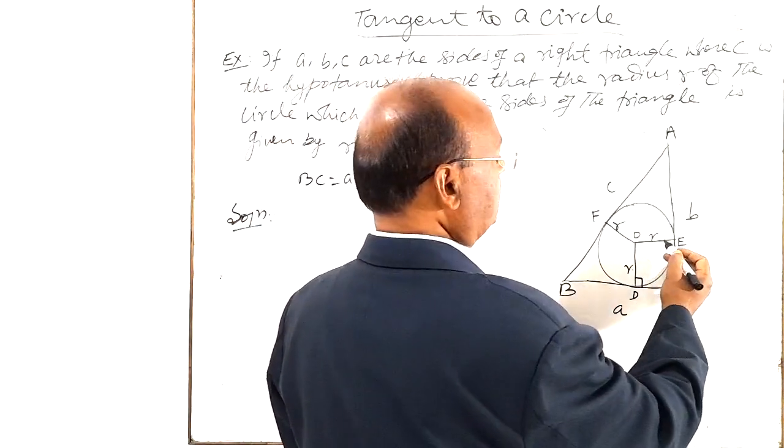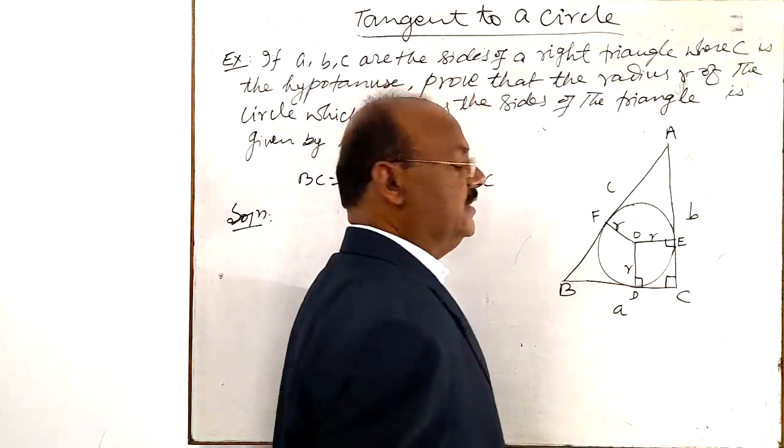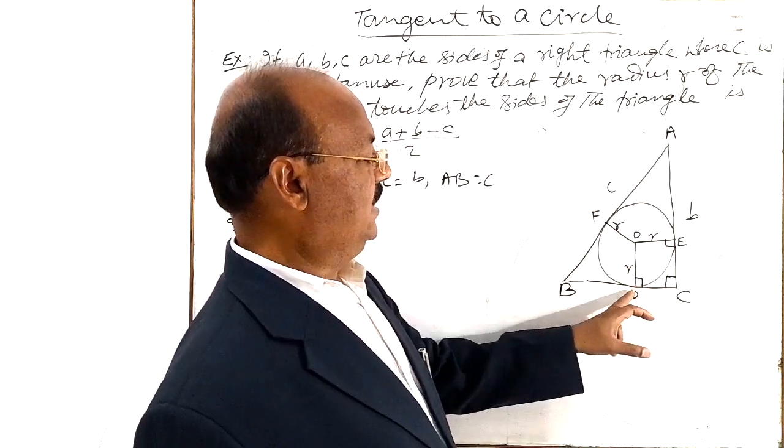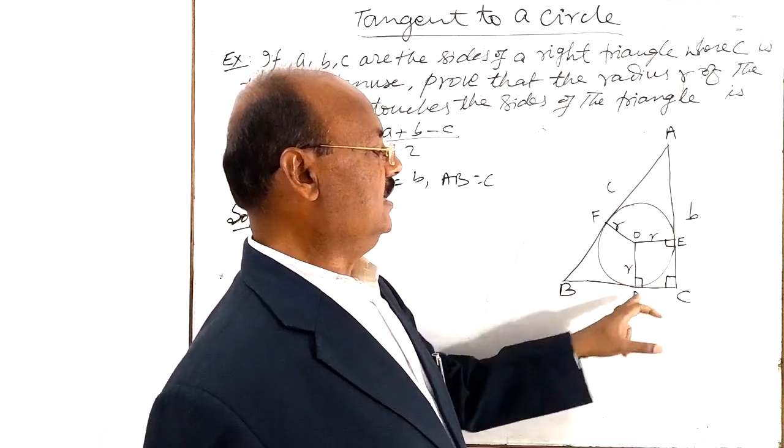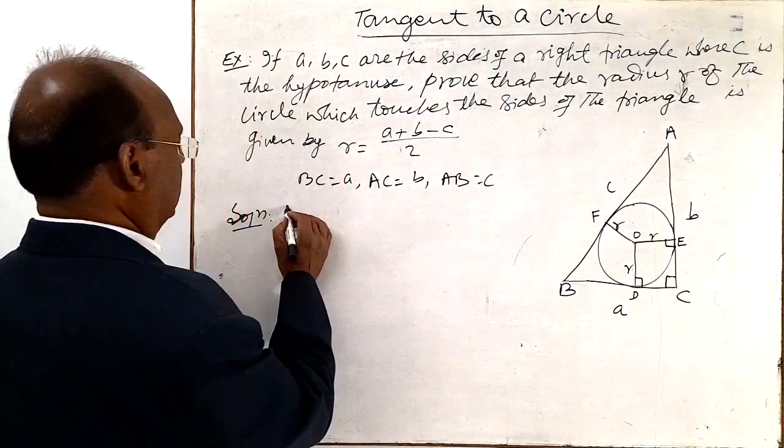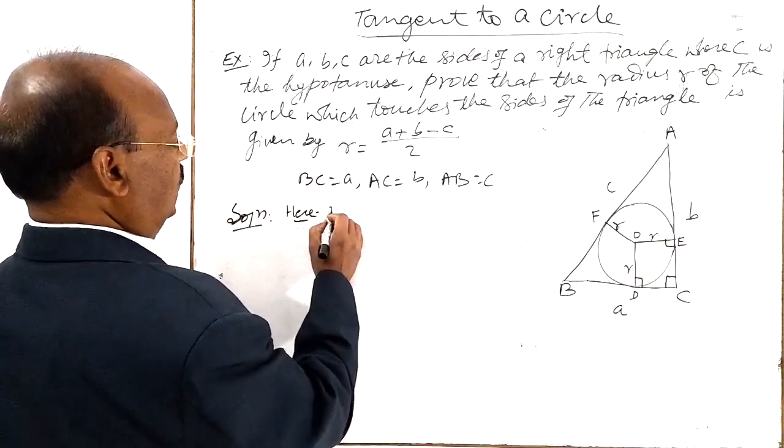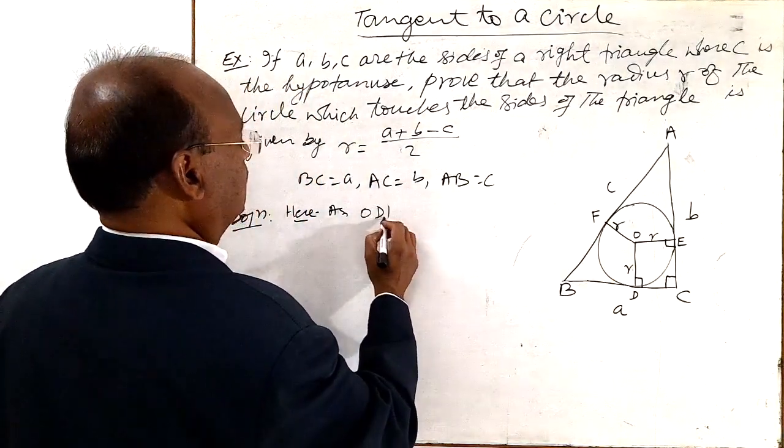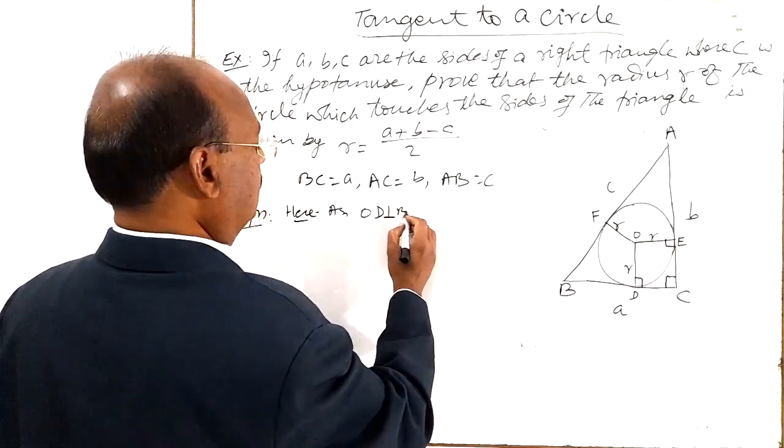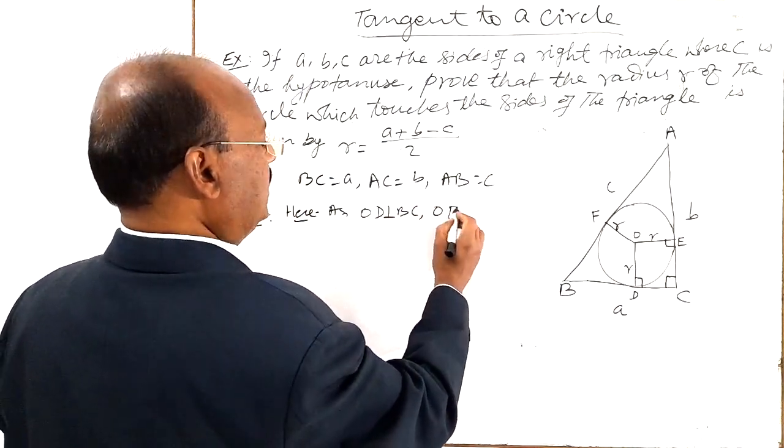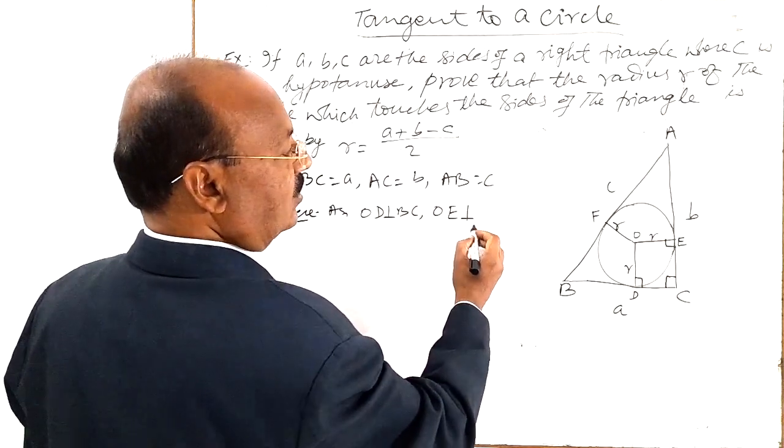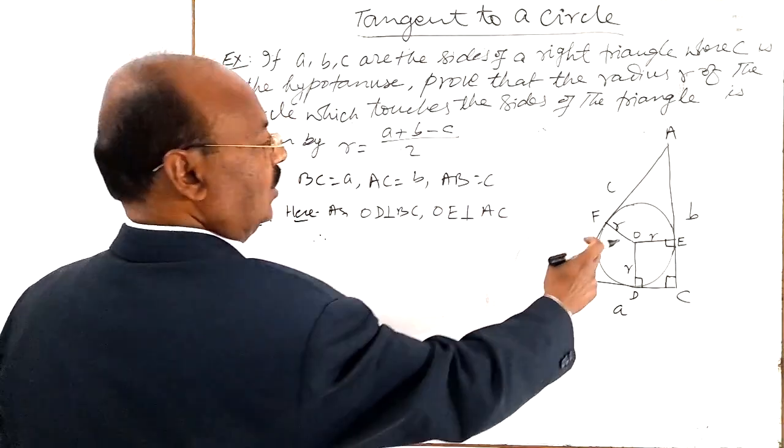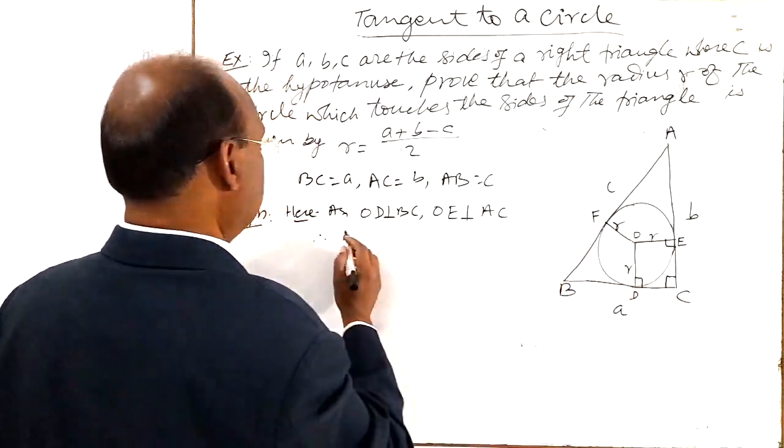So this angle is 90 degree. Similarly, this angle is also 90 degree. So obviously here ODCE is a square. Here as OD is perpendicular on BC and OE is perpendicular on AC. Therefore ODCE is a square.